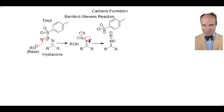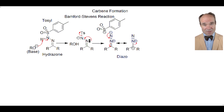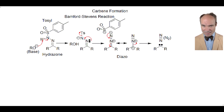The diazo compound can adopt another resonance structure that can then lose nitrogen, N2. Thus, we generate the carbene.